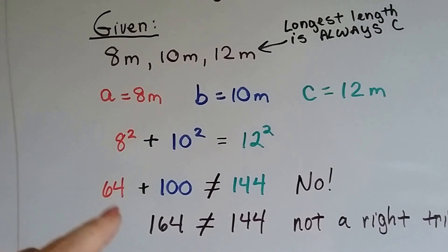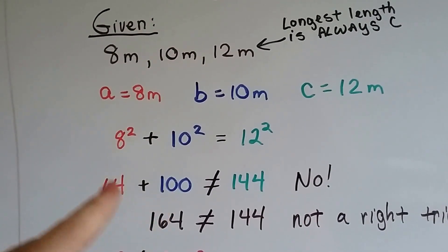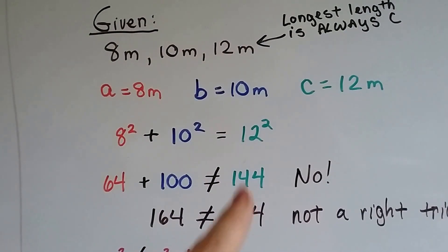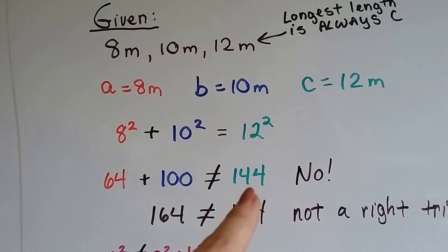8 times 8 is 64. 10 times 10 is 100. 100 plus 64 is 164. But 12 times 12 is 144. So no.